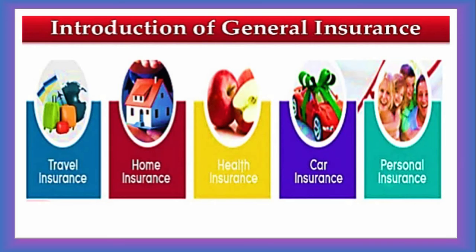There are several types of general insurance: travel insurance, home insurance, health insurance, car insurance, personal insurance, and more. Travel insurance covers disaster cases when traveling. Home insurance covers situations like a house burning down or any damage to the house. Health insurance protects a person against any major disease. Car insurance covers a person's vehicle, and personal insurance covers valuable personal belongings.